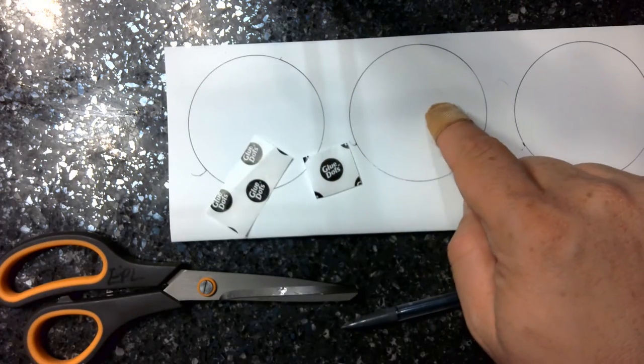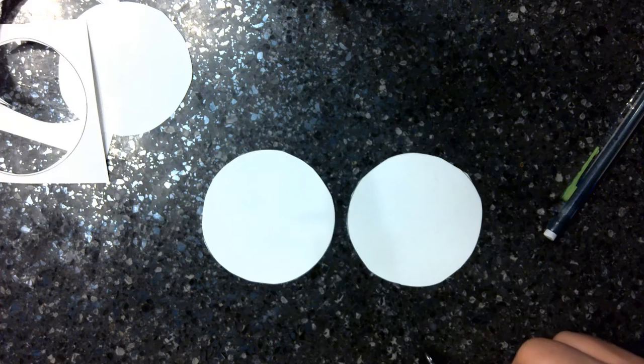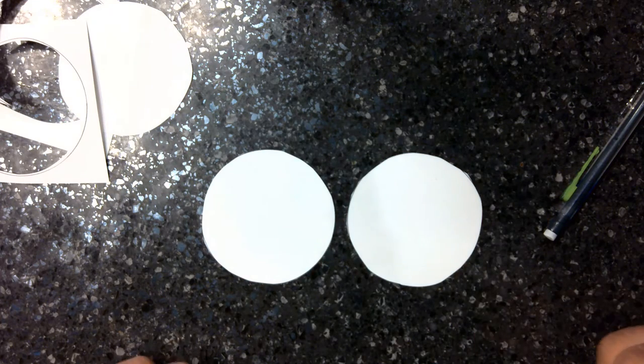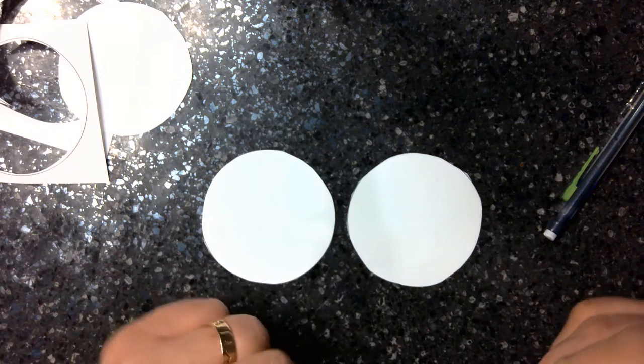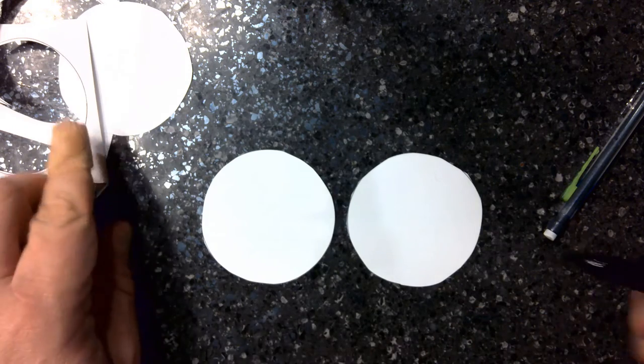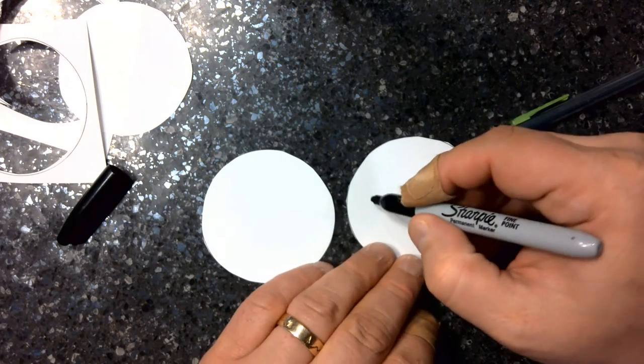Start by cutting out your circles. Once you have your two circles cut out, you're going to decide what picture you want to put on them. In this case I'm going to do something very simple. We're just going to write a word.